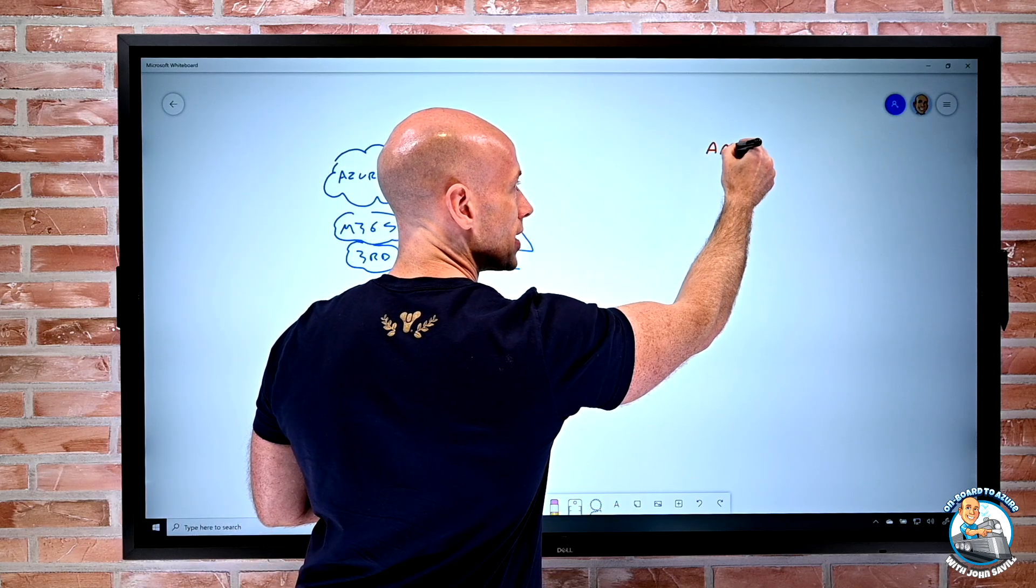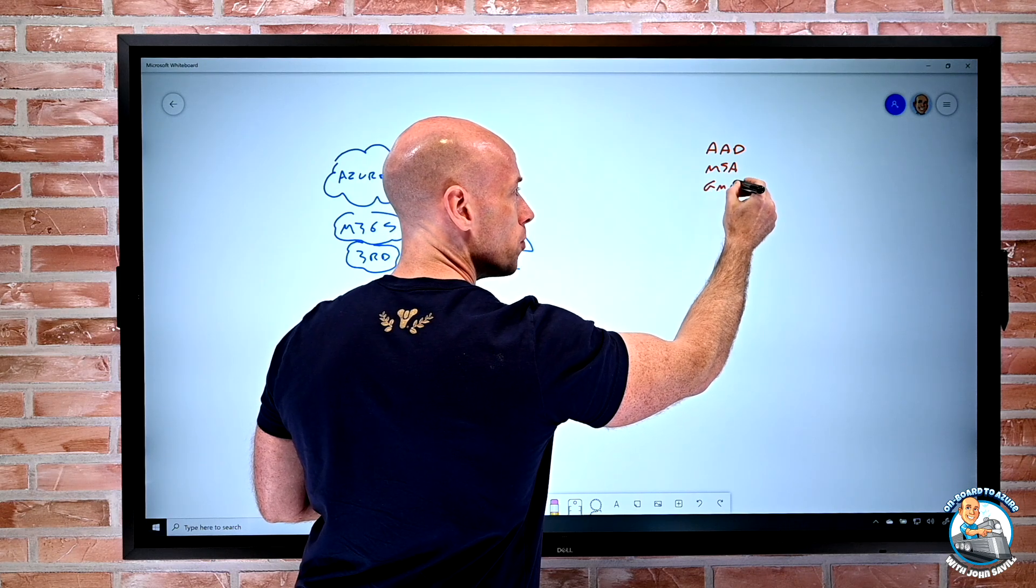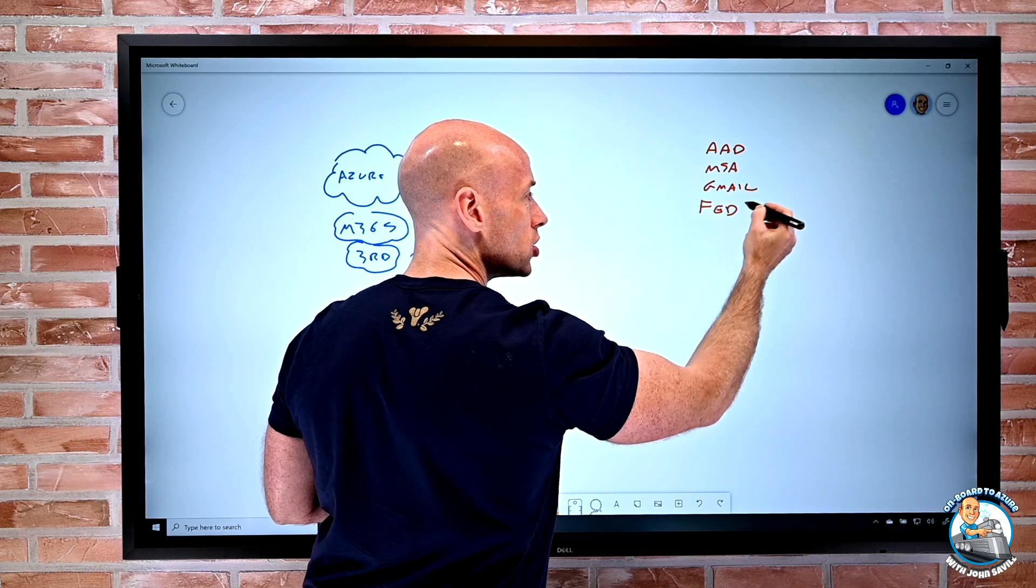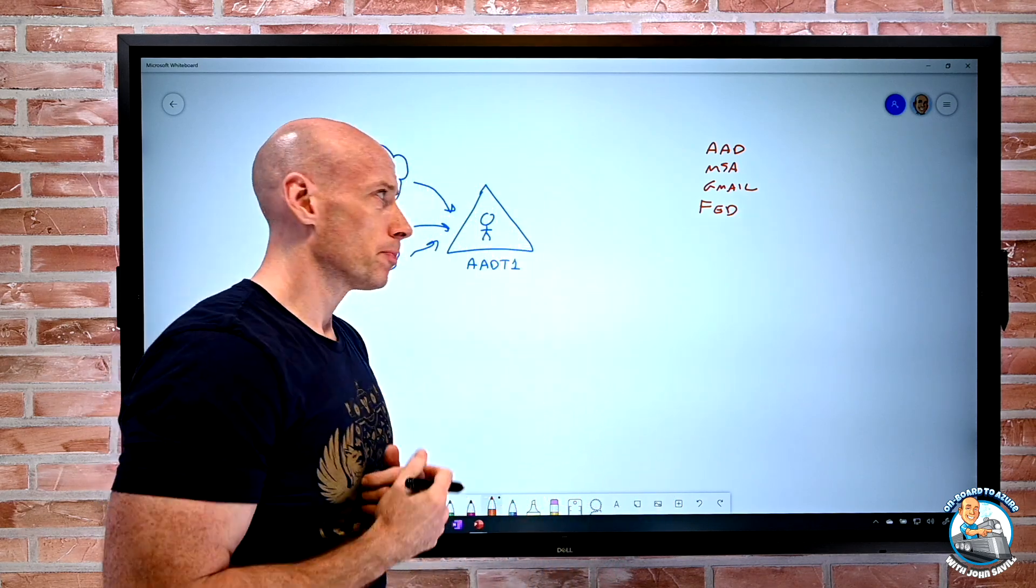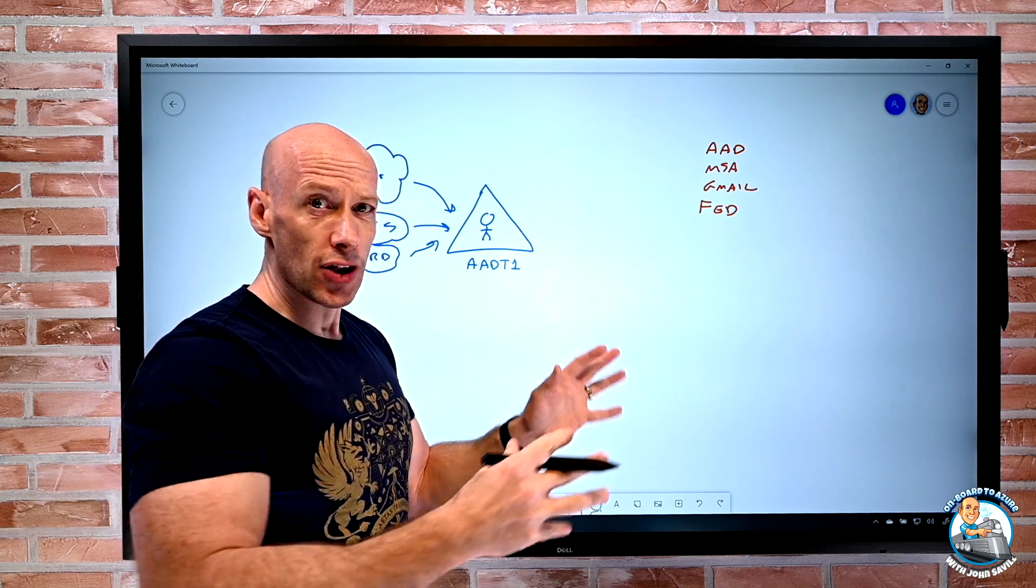So I want that other person to be able to use their own identity if possible. Now, that other identity could be an Azure AD account. It could be a Microsoft account. It could be a Gmail account. It could be via a direct federation. So it could be WSFed. It could be SAML.